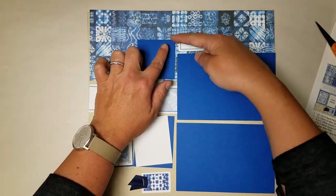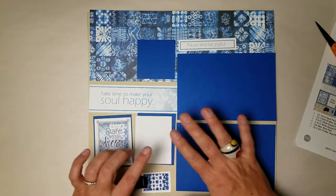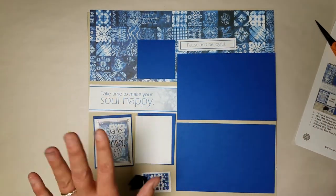And then finally you can go ahead and add pause and be joyful up here. Now notice all of these things are sort of squared off, nice and neat there. That would be Layout seven and eight.